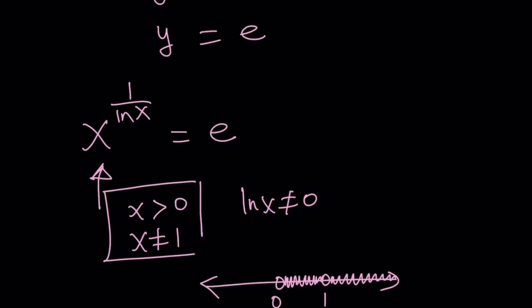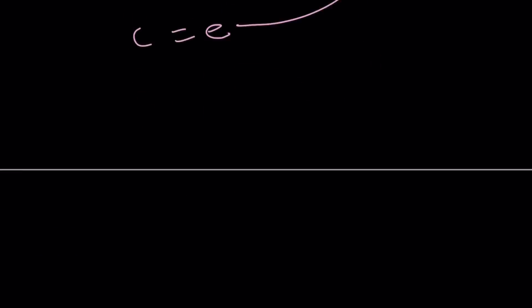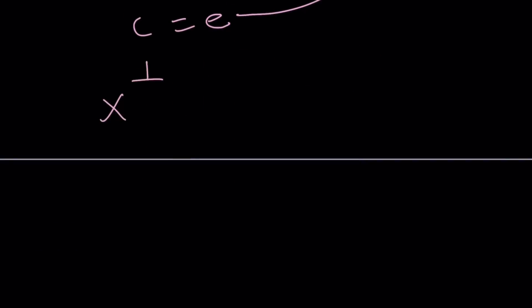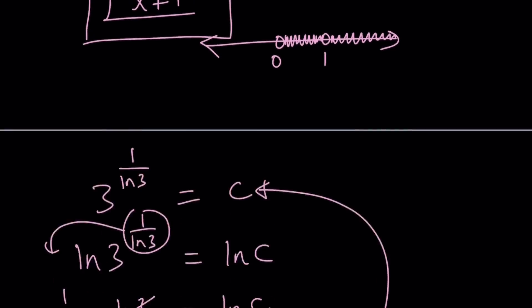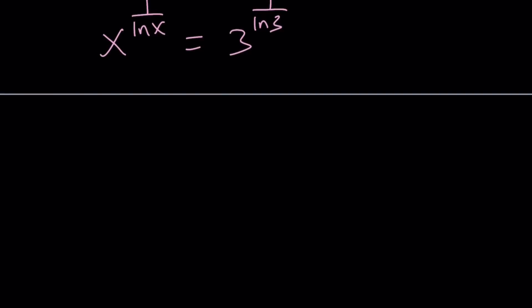So what's that supposed to mean? Well, x to the power 1 over ln x is equal to e. And 3 to the power 1 over ln 3 is equal to e. So they're always equal. Wow. That's interesting. This equality is always true. But what does that mean? It means x can be anything. Yes. Except for these values. So these are the exceptions. If you take them out, then you'll have all the x values.